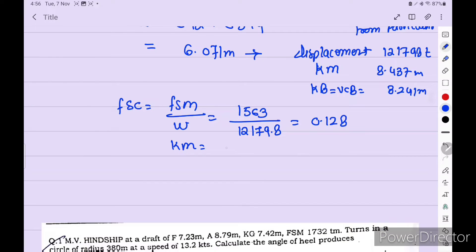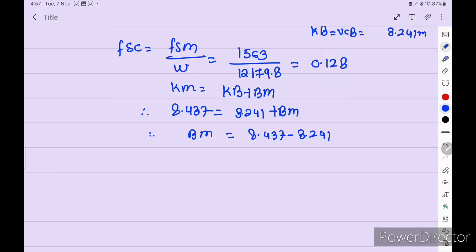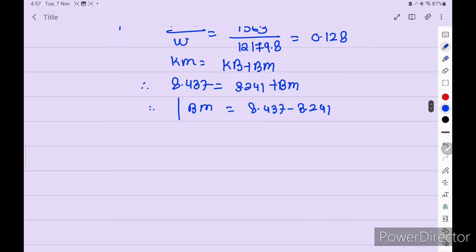Okay. So KM we already calculate. KM is equal to KB plus BM. KM we get from ambient ship particulars, 8.437. KB 3.241 is equal to VCB plus BM. We don't know. Okay. So BM is equal to 8.437 minus 3.241.